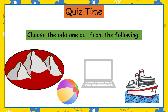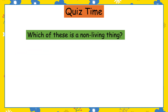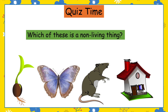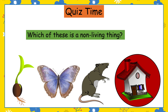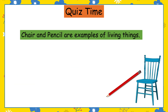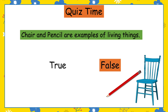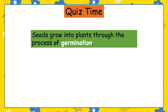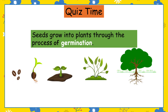Which of these is a non-living thing? Seed, butterfly, rat, house. The answer is house. Chair and pencil are examples of living things — true or false? False. Seeds grow into plants through the process of germination — true or false? True.